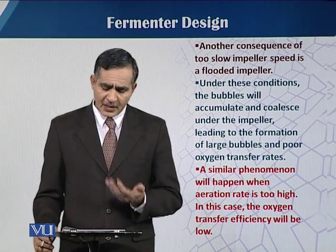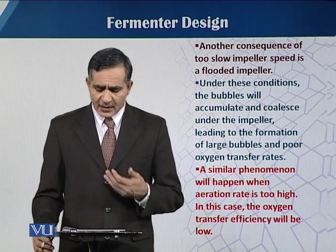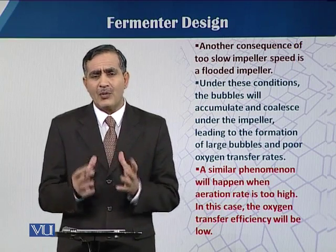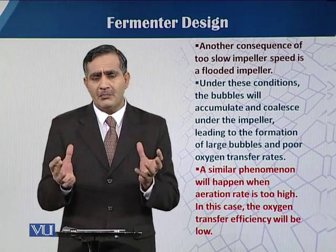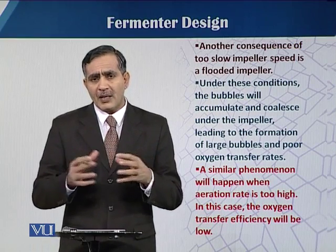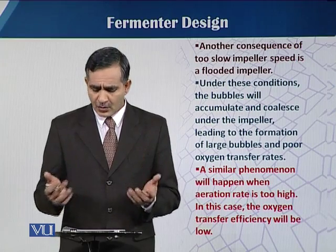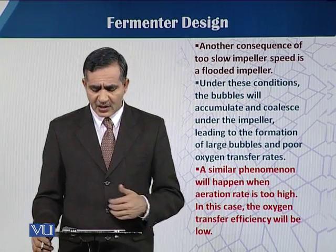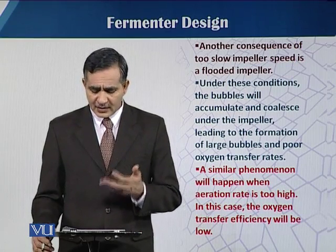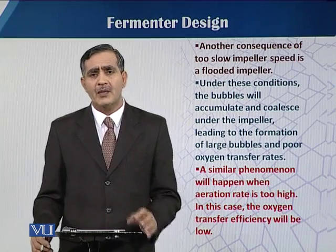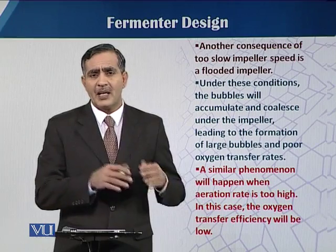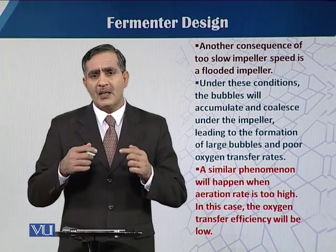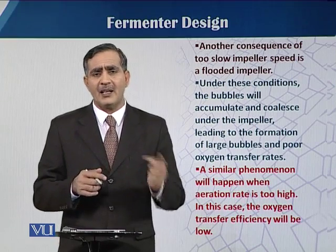Another consequence of too slow an impeller speed is flooded impellers — when there is slow speed, there is a flood of air bubbles forming a column of air, which also gives less chance of contact between air bubbles and the fermentation medium. Under these conditions, bubbles accumulate and collapse under the impeller, leading to the formation of large bubbles. Small bubbles aggregate to form bigger bubbles, and when there is a bigger bubble, there is less surface area. A similar phenomenon will happen when the aeration rate is too high. Air pressure and impeller speed are both factors which can have either a positive or negative effect.